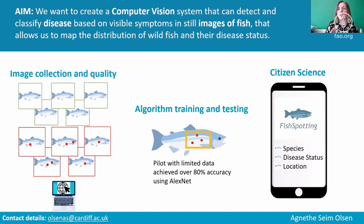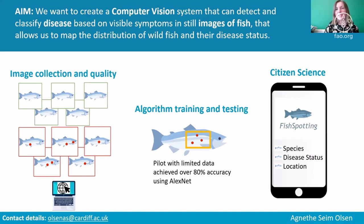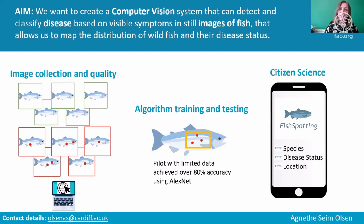We want to combine this computer vision work with a citizen science strand, working with the Ogmore Angling Association, with the pilot going live in October. Anglers will use iNaturalist, an app where you can upload photos and an AI suggests the species. We can then download the images along with species, location, and time information to map disease and fish distribution temporally and spatially.